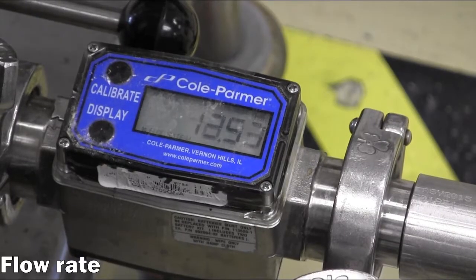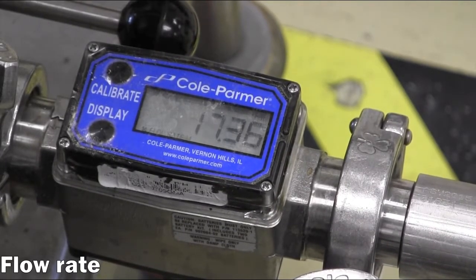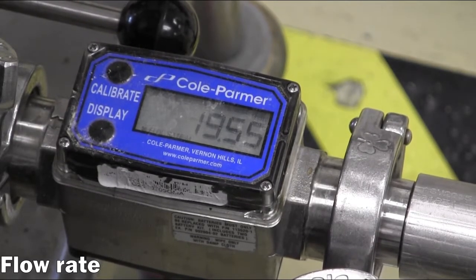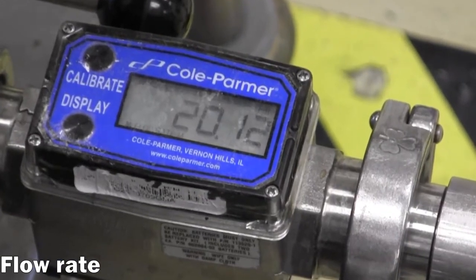The flow rate can be monitored via the digital flow meter near the feed inlet port. Take care to monitor the inlet pressure while adjusting the flow rate to not exceed manufacturer specifications, which may damage the membrane.